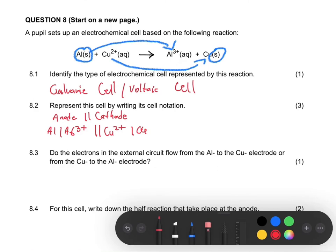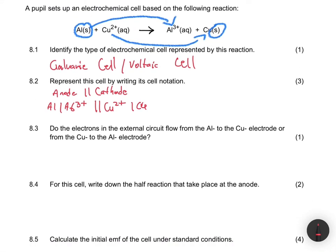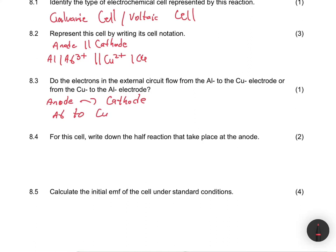Question 8.3 asks: do the electrons in the external circuit flow from the aluminium to the copper, or from the copper to the aluminium electrode? In a galvanic cell, electrons in the external circuit flow from the anode to the cathode. We've already identified the anode as aluminium and the cathode as copper, so clearly they flow from the aluminium electrode to the copper cathode.